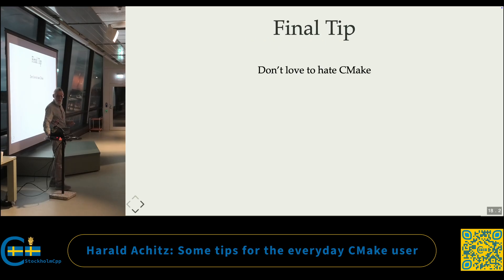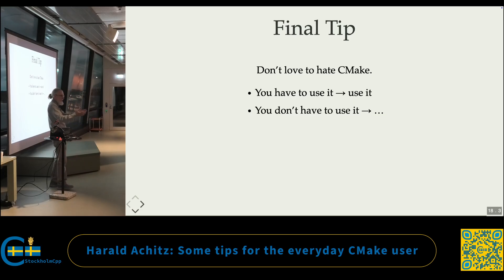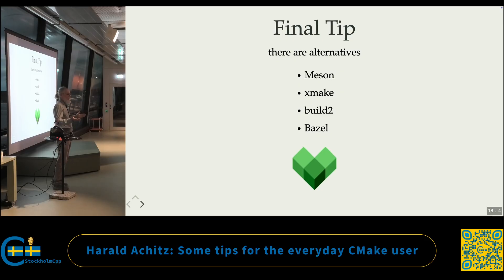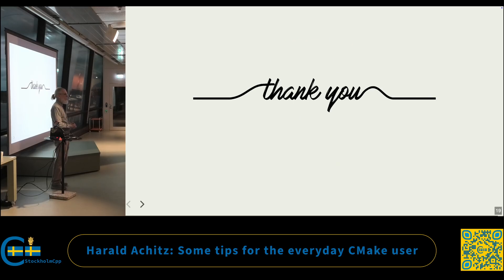And I have a final tip: don't love to hate CMake. It's fun of course, but it will not make you happy. If you have to use it, it's pointless to complain. If it helps you to vent — I'm from Vienna, I'm world champion in complaining, but you might take it seriously and not feel happy when you complain. So if you have to use it, just use it or find somebody who solves the problems for you. If you don't have to use it, there are alternatives — they are all awesome. We had an xmake talk some years ago from Petter, it's on our YouTube channel. Maybe we'll get a Bazel talk in the near future. If you want to talk about Mason, build2, or anything else, you're welcome to show us that build system. And that's already the CMake tips for the everyday user. Thank you.